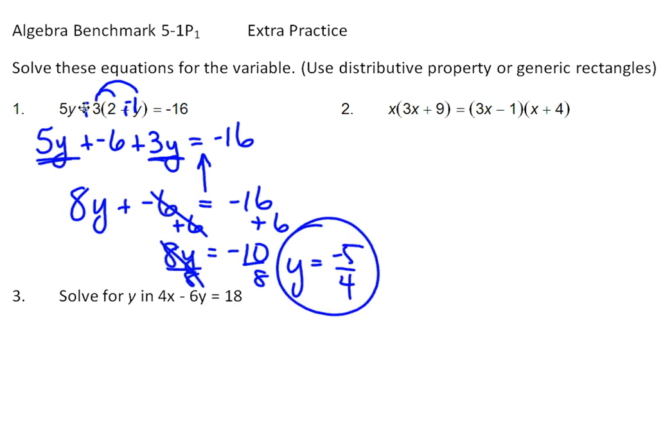For number 2, let's distribute, distribute. So 3x squared, 9x. Here, again, to be safe, you might want to make that plus negative 1. So equals 3x squared plus 12x plus negative 1x plus negative 4.